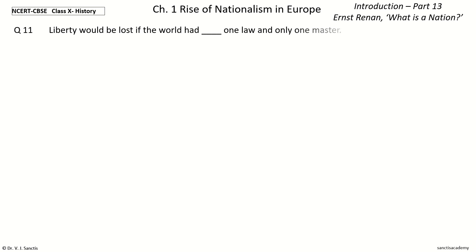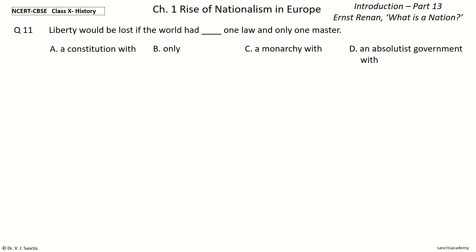Question 11. Liberty would be lost if the world had dash — one law and only one master. The options are: a constitution with, only a monarchy with, an absolutist government with. And the answer is only. So, liberty would be lost if the world had only one law and only one master.